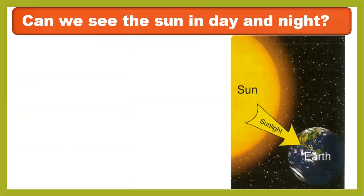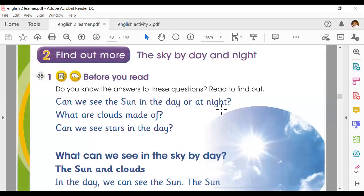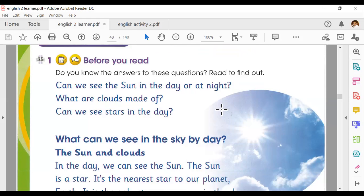Before I start this lesson, you have to listen to Track 35, where you can learn about what you can see in the sky in the day and the night. I'm going to play Track 35, where you will learn: can we see the sun in the day or at night, what are clouds made of, and can we see stars in the day? So listen to Track 35.